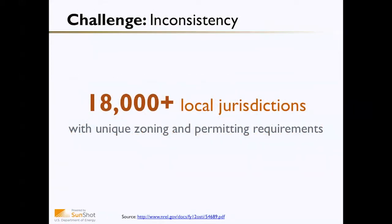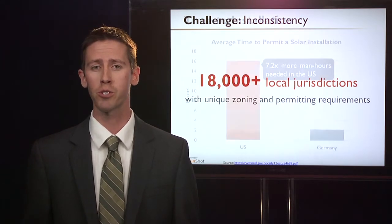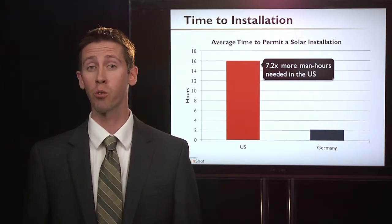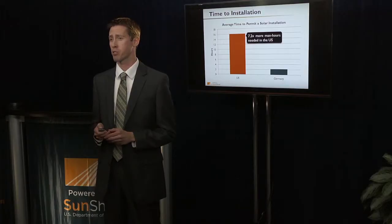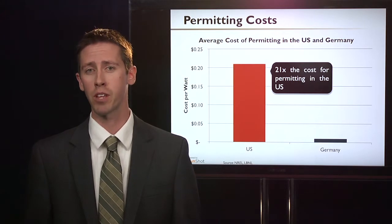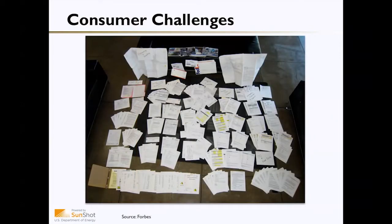One of the issues is inconsistency in the permitting process. There are over 18,000 jurisdictions in the United States that have unique zoning and permitting requirements, making it complicated both for homeowners and solar developers. This adds to the time it takes to install a solar system — it requires over seven times the number of man hours to permit a system in the United States compared to Germany, which drives the cost of permitting up by over 21 times. This creates an enormous amount of paperwork.